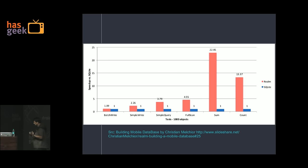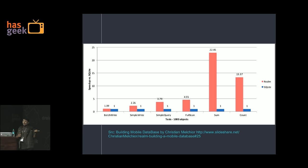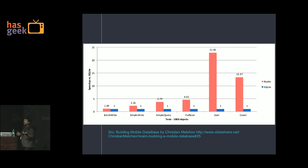The only place where Realm is just as good as SQLite is batch write — when you are writing a lot of objects — because they have not optimized it for write. But for other things like simple query, sum, or count, Realm is really, really fast. They tested it on a thousand objects. I took a benchmarking solution from DBFlow SQL ORM, added Realm, and did a simple operation of 100,000 objects read and write.